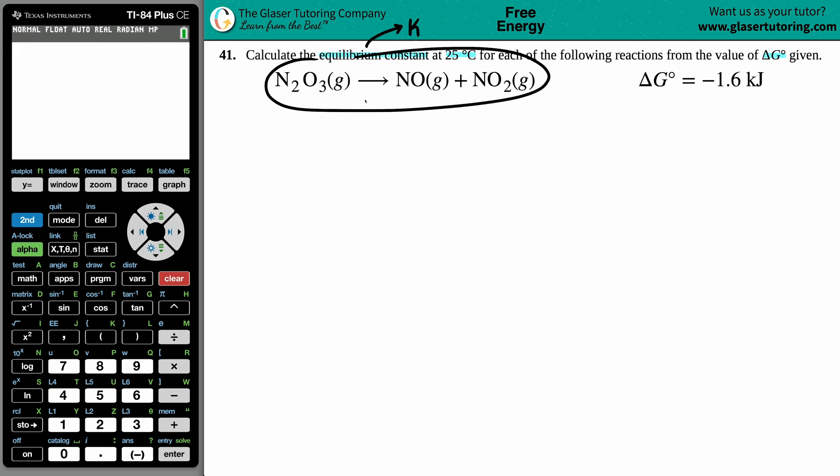But it doesn't matter because there's only one equation that links an equilibrium constant with the delta G, and there's two variations. But since we're solving for equilibrium constant, it's easiest to just memorize the formula as this: